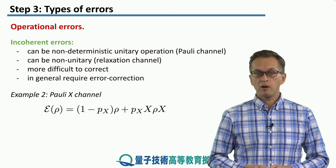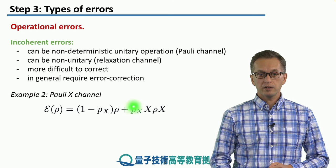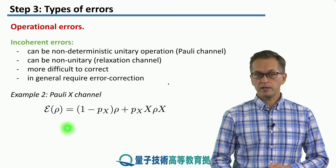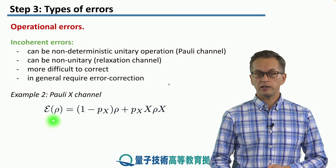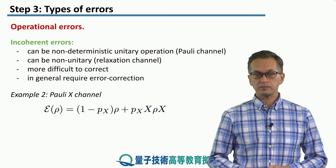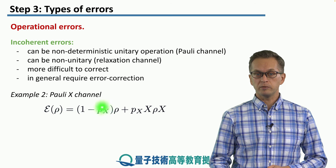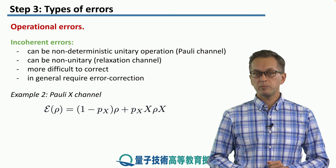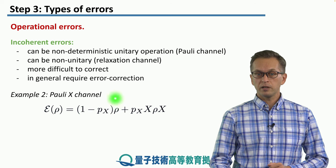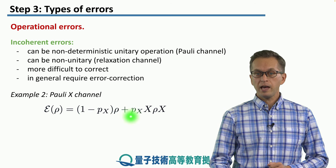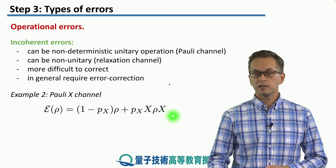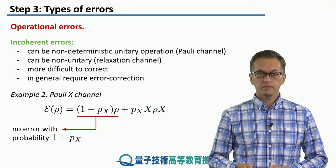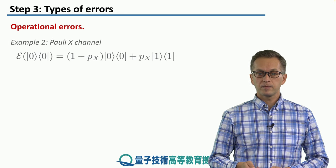Here's our example of a Pauli X channel. We start with a general state rho — it doesn't have to be pure. We apply the Pauli X channel, represented by epsilon, and we write it as the sum of two terms: with probability 1 minus px, we get our input state rho back, and with error probability px, we apply the Pauli X to our state.